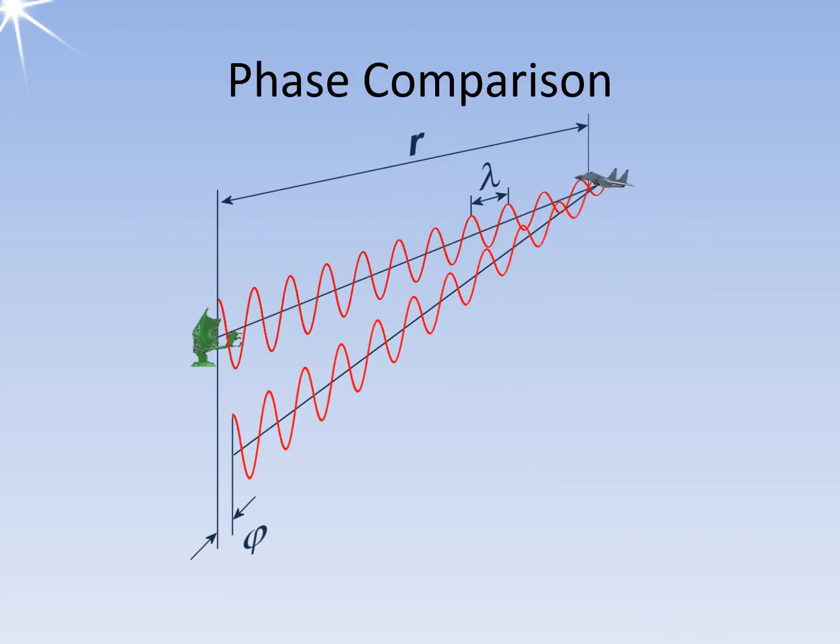Doppler frequency is the magic word for the detection of moving targets. When using a frequency filter to measure a Doppler frequency, much time is needed because the corresponding filters must first settle. This time is not available on the radar.